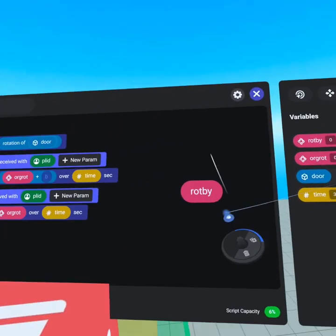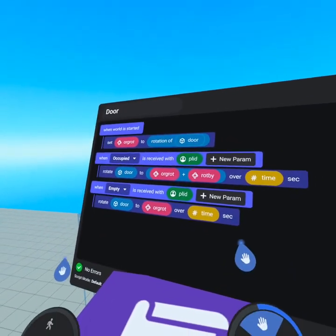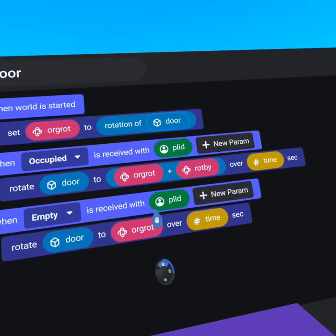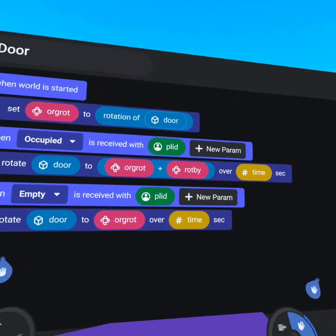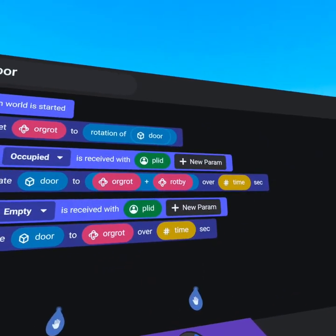Drop the plus sign, head to our variables tab, grab origin rotation plus rotate by. It's very important to note that whenever you are rotating with an origin rotation, the origin rotation must be on the left side.